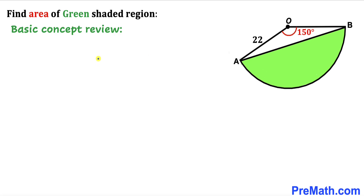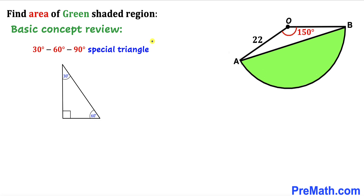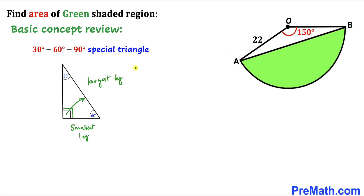Before we proceed, let me go over the basic concepts. Let's talk about the 30-60-90 degrees special triangle. The 30 degrees is our smallest angle, so the side opposite to it is going to be our smallest leg. The 90 degrees is our largest angle, so the side opposite to it is our largest leg. In a 30-60-90 triangle, the largest leg is twice the smallest leg. If the smallest leg is x units, then the largest leg is 2x.